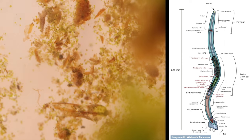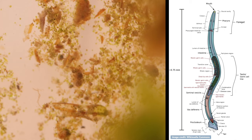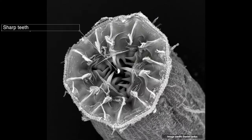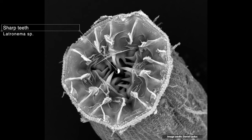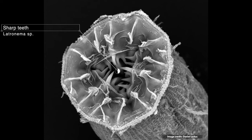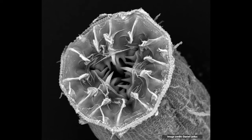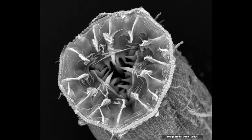The head of a nematode is relatively distinct. The mouth has either 3 or 6 lips, which often bear a series of teeth on the inner edges. In this amazing high-magnification shot from Daniel, you can see 21 sharp teeth on the species Letronema, which is a fierce predator that feeds on other nematodes.